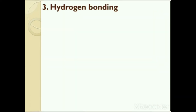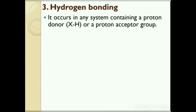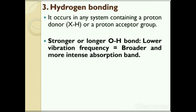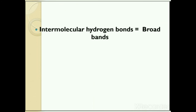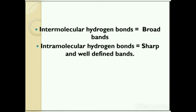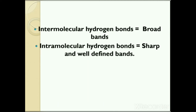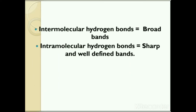Next factor is hydrogen bonding. Hydrogen bonding occurs in any system containing a proton donor or proton acceptor group. The stronger or longer the OH bond, the lower the vibrational frequency, and broader and more intense will be the absorption band. The NH stretching frequencies of amines are also affected by hydrogen bonding, but frequency shifts for amines are less than for hydroxyl compounds because nitrogen is less electronegative than oxygen. Intermolecular hydrogen bonds give rise to broad bands, while intramolecular hydrogen bonds give sharp, well-defined bands. The inter- and intramolecular hydrogen bonding can be distinguished by dilution: intramolecular hydrogen bonding remains unaffected on dilution, whereas intermolecular bonds are broken on dilution, resulting in a decrease in bonded OH absorption.